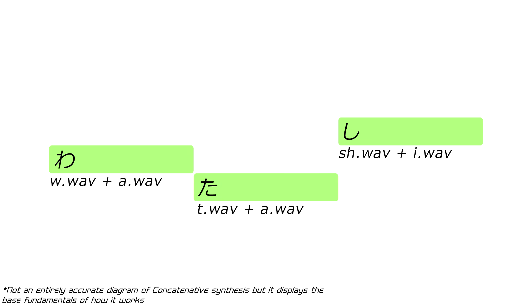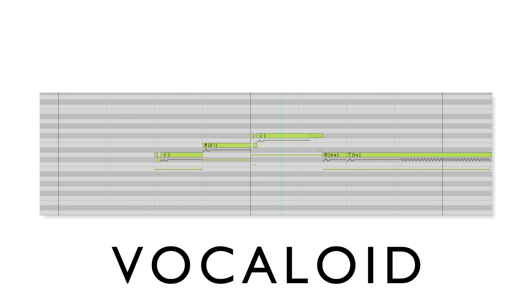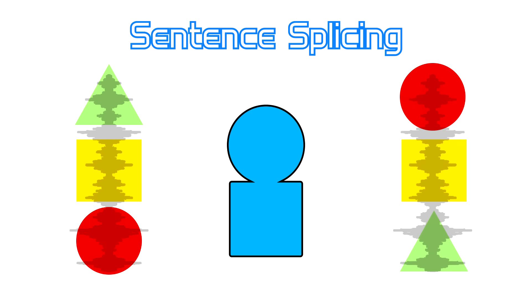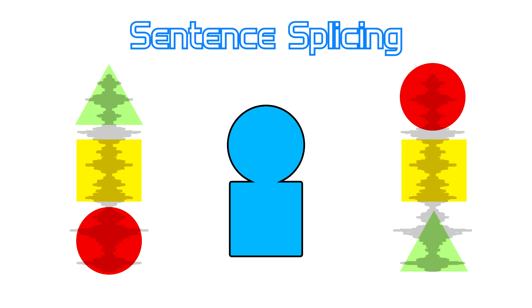Then, when the voice bank is in use, the editor will directly recover and pitch correct the phonetics in those raw recordings. This is the classic method of vocal synthesis that can be found in engines such as Vocaloids 2-5 and Utao. For a point of comparison, think of it like sentence splicing — taking the sounds from recordings and jumbling them into different places to make all new ones.